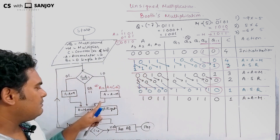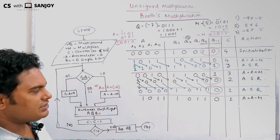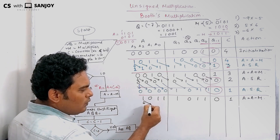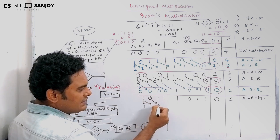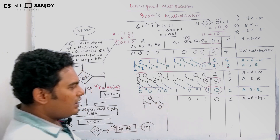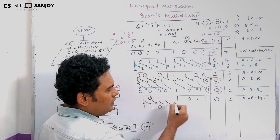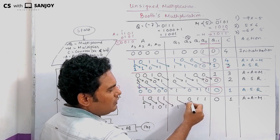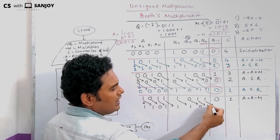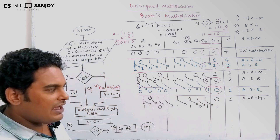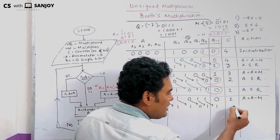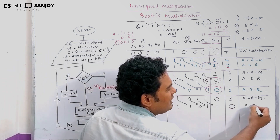After A minus M operation and arithmetic right shift, A and Q shift right. Counter decrements: C equals C minus 1, so C becomes 0. Since C equals 0, the arithmetic shift right is done and the algorithm terminates.